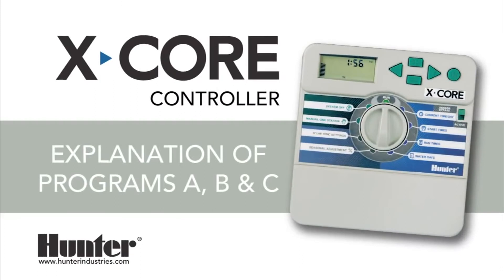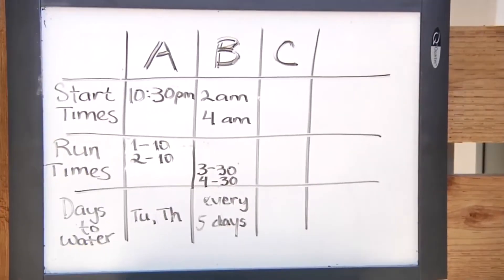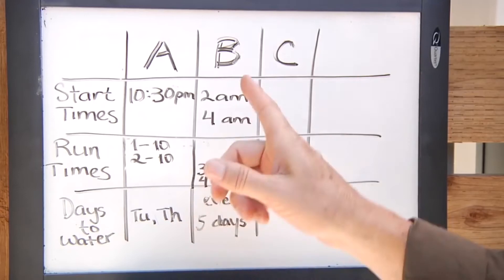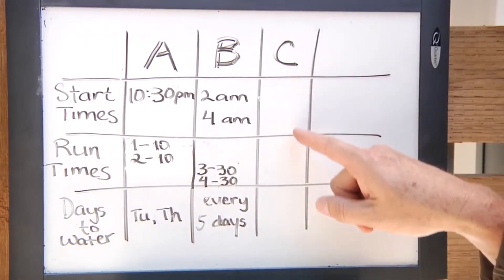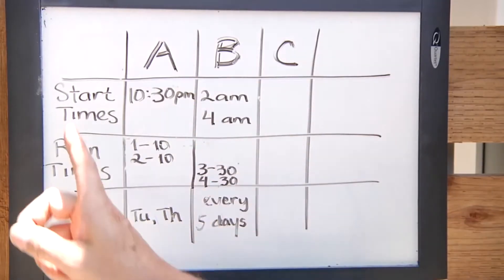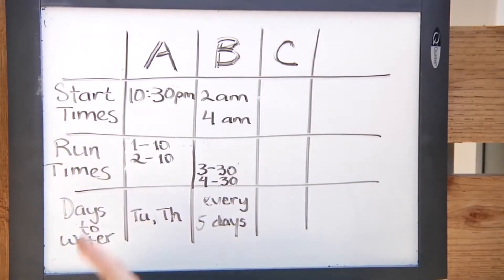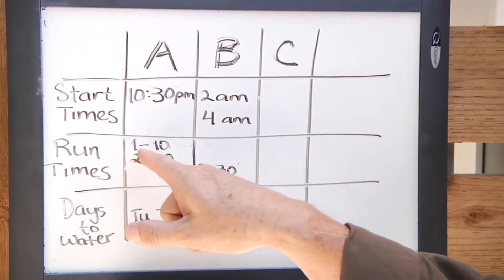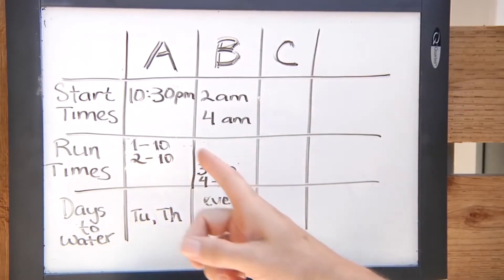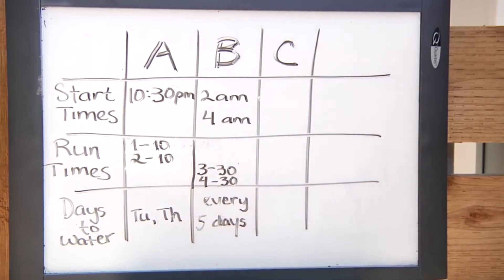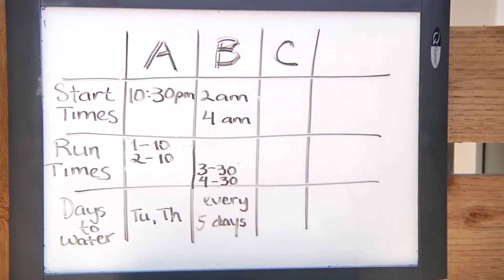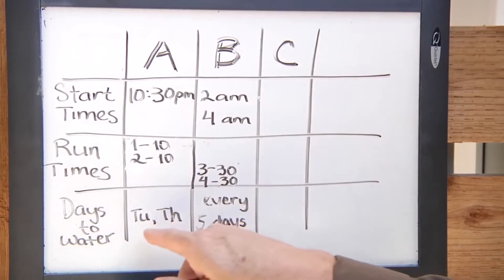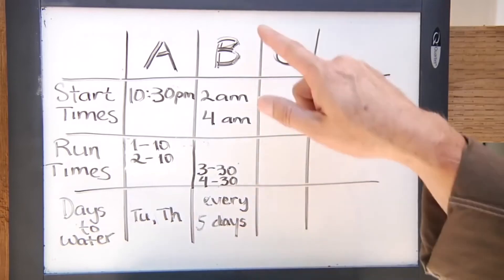To explain the use of programs A, B, and C, we have a chart like a tic-tac-toe board with columns A, B, and C. Each program has all three ingredients: start time, run time, and days to water. In this example, stations one and two are grass zones watering only on Tuesday and Thursday, while stations three and four are fruit trees requiring watering every five days. Because they have different day requirements, we split them across different programs.